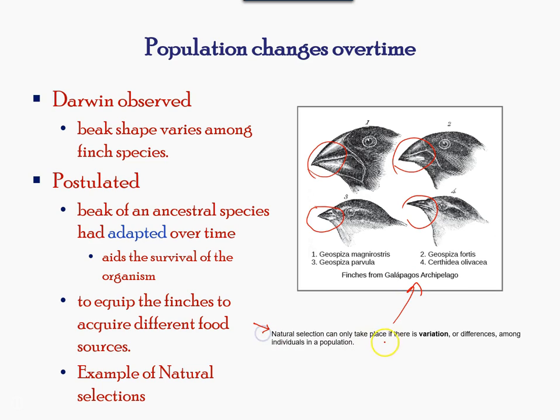Three factors support natural selection. Firstly, the characteristics of an organism can be inherited. Secondly, more offspring are produced than are able to survive. Thirdly, offspring vary in regard to their characteristics, and these variations can be passed on to the next generation.